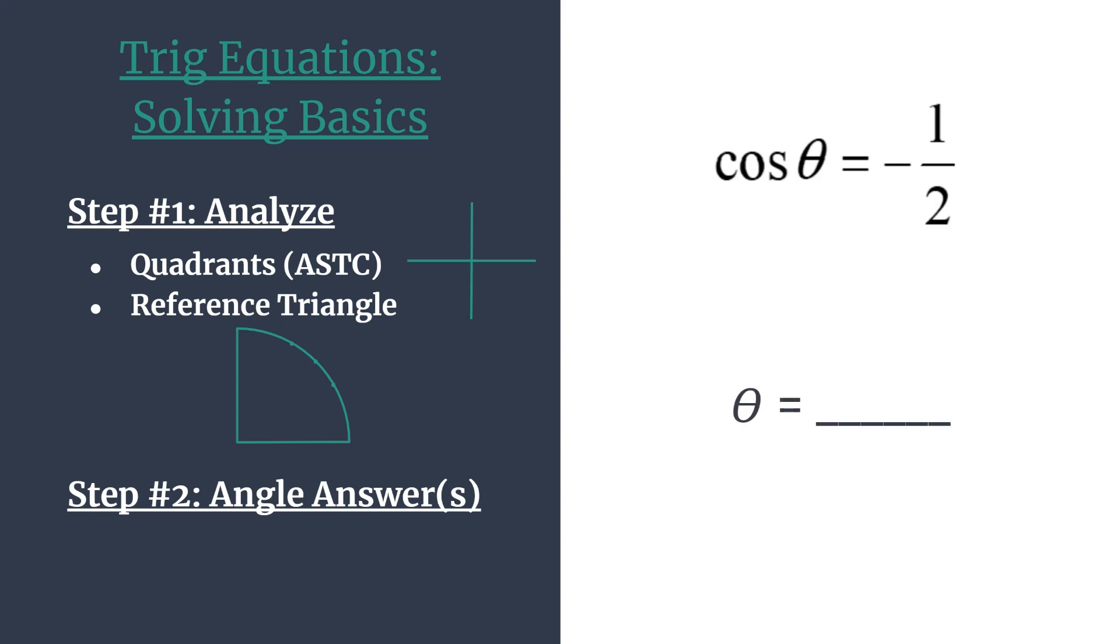So we'll do this for cosine theta equals negative one-half. So step one, let's analyze. We're going to use that acronym ASTC. You may be familiar with it. Think all students take classes. And this is just a quick way to label your quadrants so that you can remember which trig functions are positive in each of them.